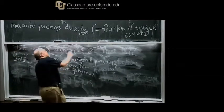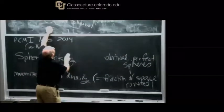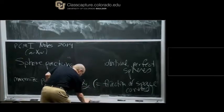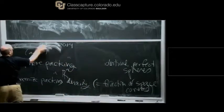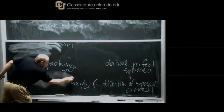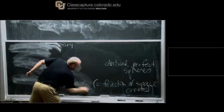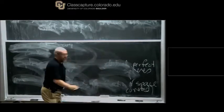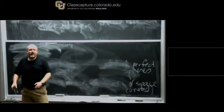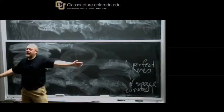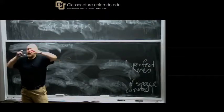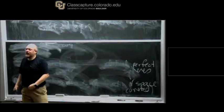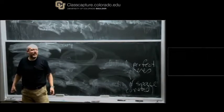How do we define density exactly? Take a big chunk of space, look at the ratio of volume of spheres in that chunk to the volume of the whole chunk, and let the chunk get bigger and bigger. The same approach carries into four and five dimensions.